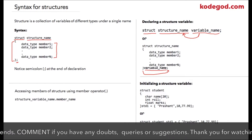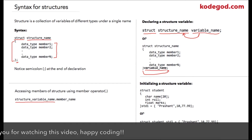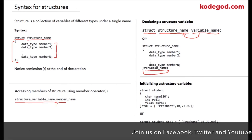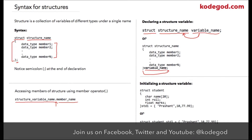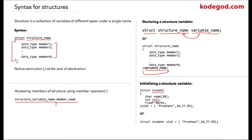To access data members of a structure, use the variable of type structure followed by a dot operator, and then write the member name. For example, if we have a structure student with a variable role inside it, and we declare a variable std1 of type student, we can access role using the syntax std1.role.